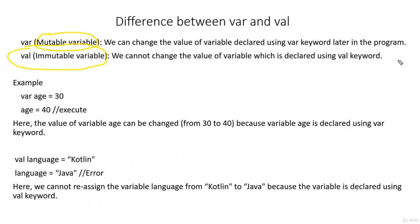For example, let's say we create a val name h equal to Kotlin, and later we have a requirement to change that variable value to Java. We will not be possible to change the value once we create a variable using the val keyword.